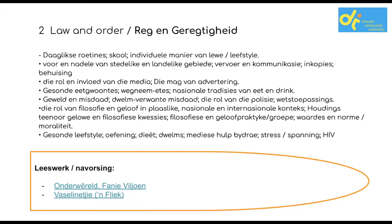The next theme is Law and Order, or Reg en Geregtigheid. This one focuses on daily routine, school, individual lifestyle, and whether we live individually or want to conform. It covers the advantages and disadvantages of urban and rural life, transportation, communication, shopping, and housing — all things connected to laws that have been initiated and whose consequences we still experience.